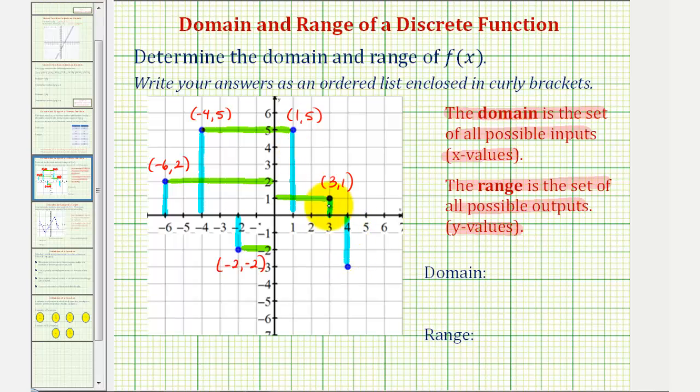And finally we have the point (4, -3). So four is in the domain, and negative three is in the range.